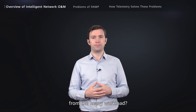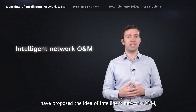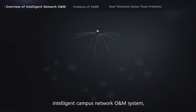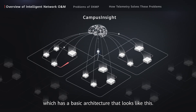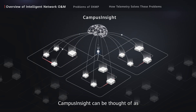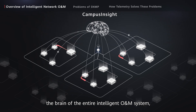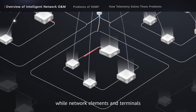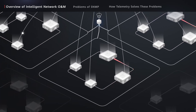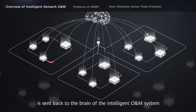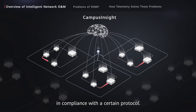This makes network O&M more difficult than ever and puts much pressure on network engineers. So, how can we free network engineers from heavy workload? Many industry-leading vendors have proposed the idea of intelligent network O&M, such as Huawei's intelligent campus network O&M system, which has a basic architecture where Campus Insight can be thought of as the brain of the entire intelligent O&M system, while network elements and terminals are like the torso and limbs. The collective network service data is sent back to the brain of the intelligent O&M system in compliance with a certain protocol.